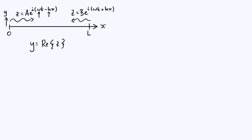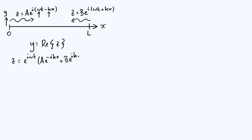Now let's use the principle of superposition to find the overall wave on the string. If we add the two waves together, notice that they both contain a factor of e to the i omega t. So we can factorize that out and write the overall complex displacement as e to the i omega t times, from the right-traveling wave, a·e to the minus ikx, plus from the left-traveling wave, b·e to the positive ikx.